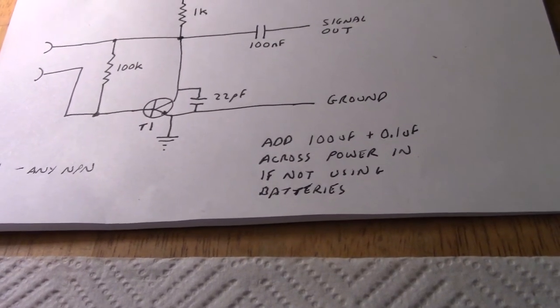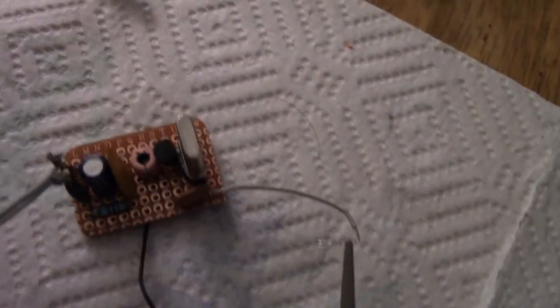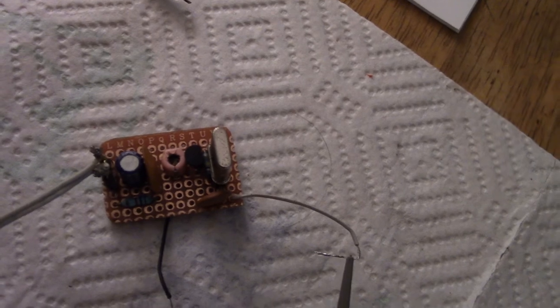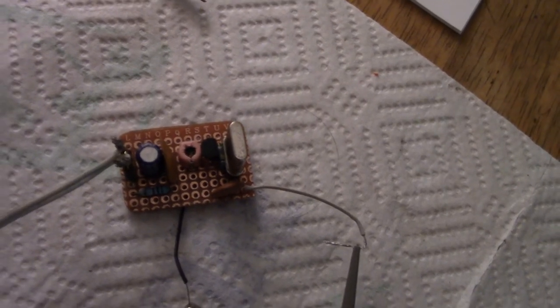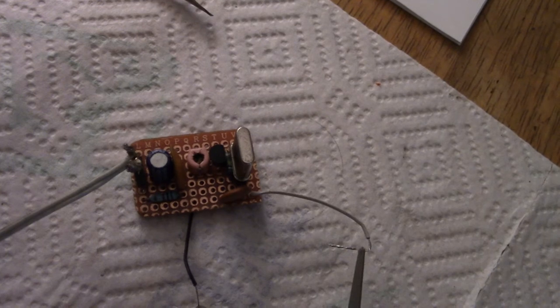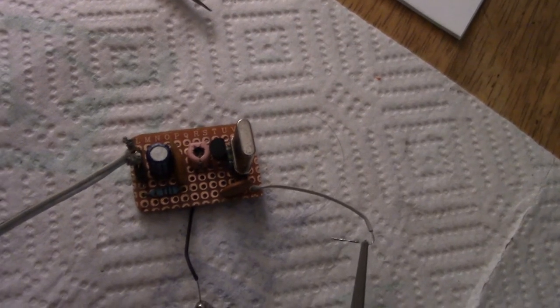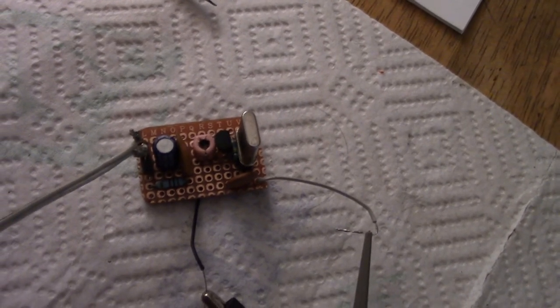The transistor can be any NPN and there we are with the circuit on the board there. For the eagle-eyed or the sad as me kind of people, you can see that the circuit board edges are shaped a lot like one of the larger can type four pin oscillators.